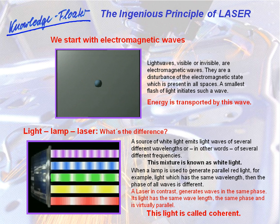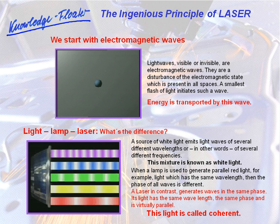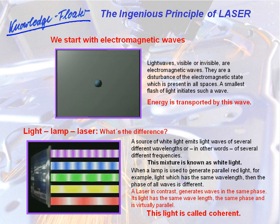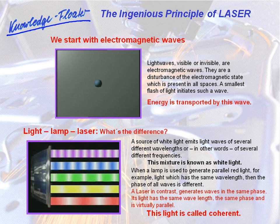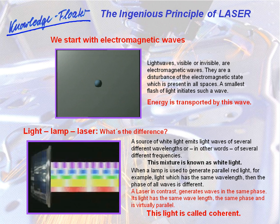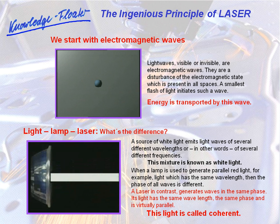Light, lamp, laser — what's the difference? A source of white light emits light waves of several different wavelengths, or, put another way, of several different frequencies. This mixture is known as white light.